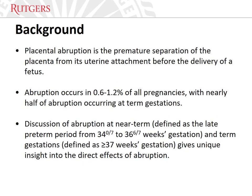Placental abruption is the premature separation of the placenta from its uterine attachment before the delivery of a fetus. Although the clinical manifestations are myriad, abruption is classically associated with vaginal bleeding and abdominal pain with or without uterine contractions and is often accompanied by abnormal fetal heart rate patterns. Abruption occurs in 0.6% to 1.2% of all pregnancies, with nearly half of abruption occurring at term gestations. The discussion of abruption in near-term, defined as the late preterm period from 34 to 36 weeks and 6 days, and term gestations, defined as greater than or equal to 37 weeks, gives unique insight into the direct effects of abruption.